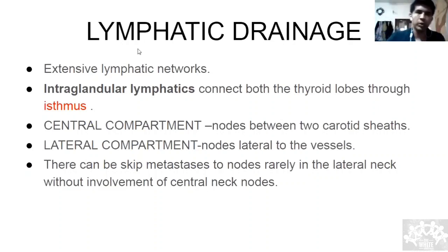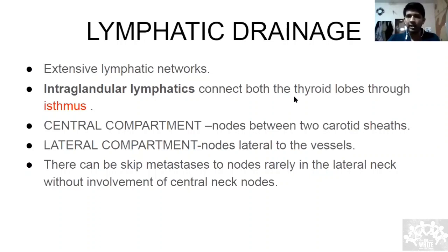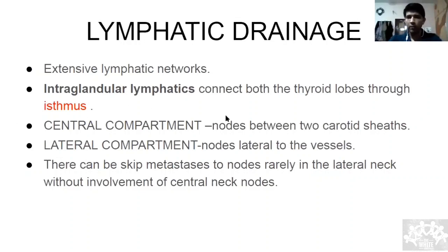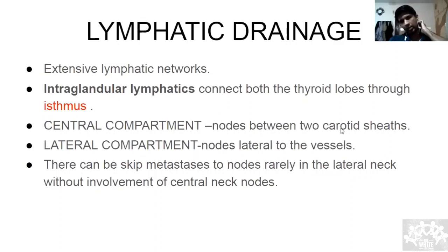Coming to lymphatic drainage: the thyroid has an extensive lymphatic network, both rich in vascularity and lymphatic supply, including intraglandular lymphatics. From one lobe, lymphatics can travel to the other through the isthmus. The first node the lymphatics go to is the central compartment — Level 6, the pre-tracheal and pre-laryngeal lymph nodes. The first specific node is called the Delphian lymph node. From there it goes to the lateral compartment, Levels 3 and 4.